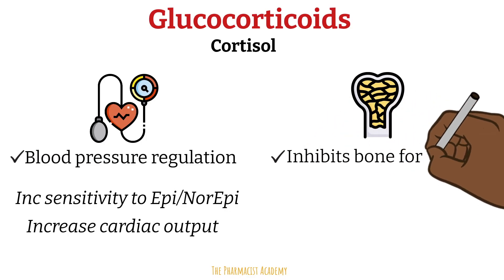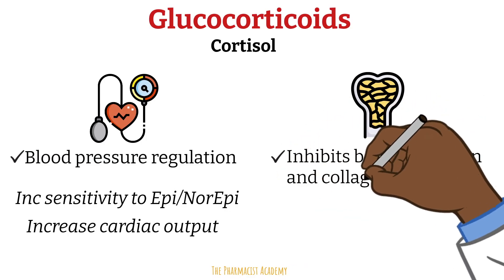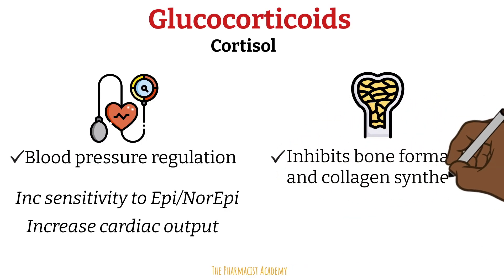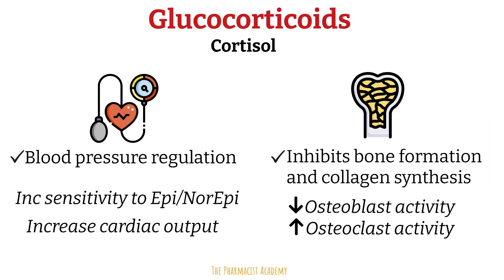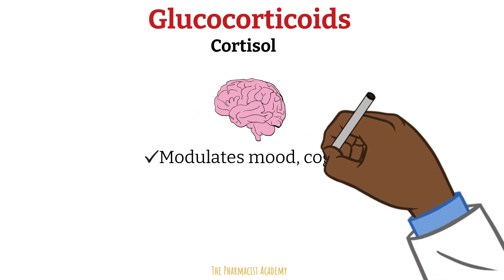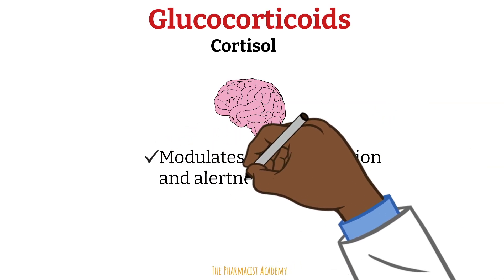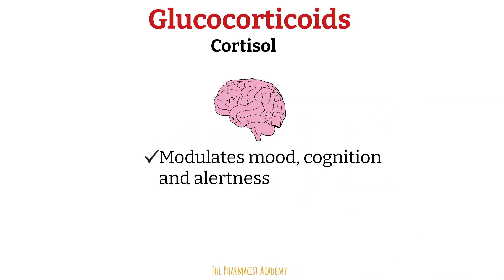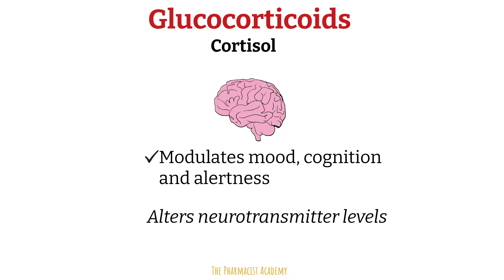Cortisol inhibits bone formation and collagen synthesis by decreasing osteoblast activity and increasing osteoclast activity. Cortisol also modulates mood, cognition, and alertness by altering the levels of neurotransmitters like serotonin and dopamine. It affects parts of the brain, leading to improved alertness, enhanced focus, memory, and improved attention and learning.